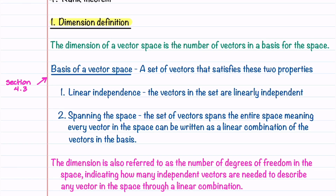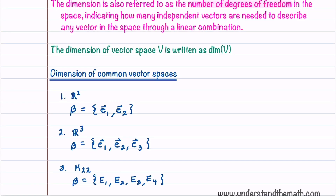We'll begin by defining what the dimension of a vector space is. The dimension of a vector space is the number of vectors in a basis for the space. From section 4.3 we learned that the basis contains vectors that are linearly independent and span the space. The dimension is often referred to as the number of degrees of freedom, indicating how many independent vectors are needed to describe any vector through a linear combination. We write it as dim of V.